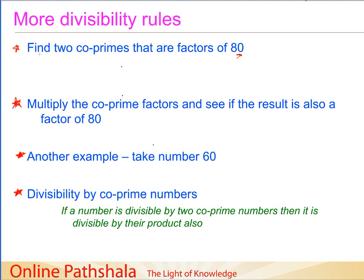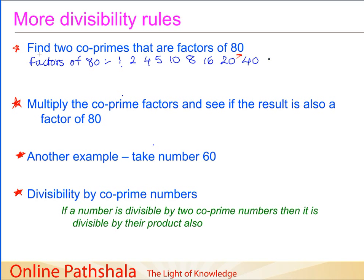In order to find the co-prime numbers, we first write down all the factors of 80. The factors of 80 are: 1, 2, 4, 5, 10, 8, 16, 20, 40, and 80. Note that 8 also divides 80, and 16 multiplied by 5 gives 80, so these are all the factors of the number 80.